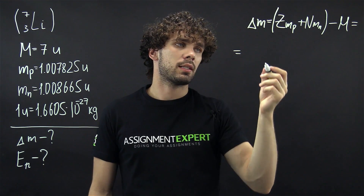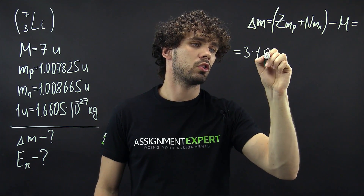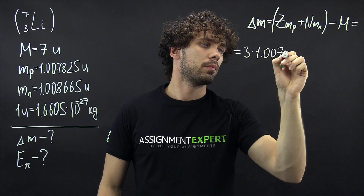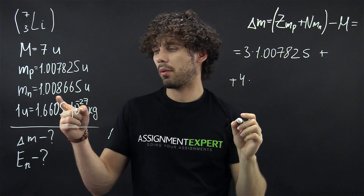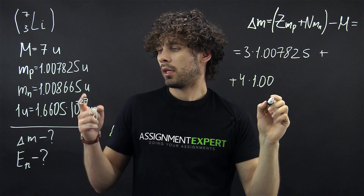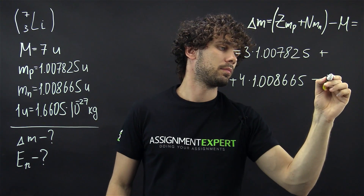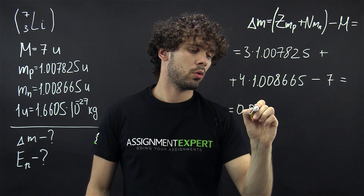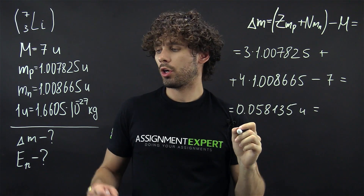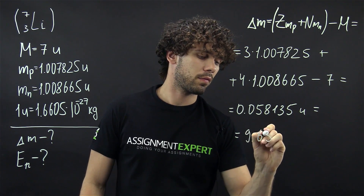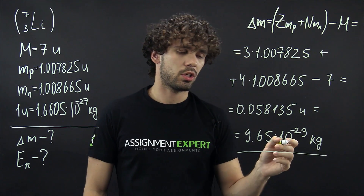So given our values we can find Delta M. We have 3 protons multiplied by the mass 1.007825, plus 4 neutrons multiplied by the mass 1.008665, and we subtract the mass of the nucleus, 7. This gives us 0.058135 u, or using the conversion formula we get 9.65 times 10 to the negative 29 kilograms. So here is the mass defect.